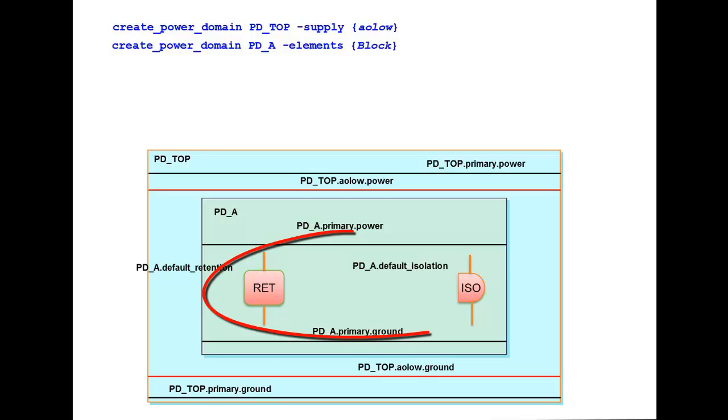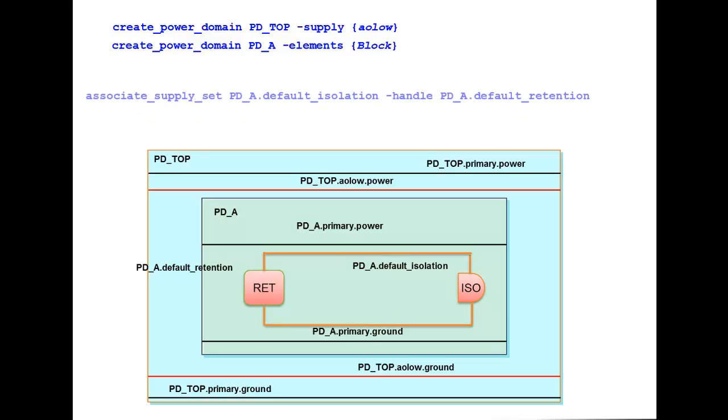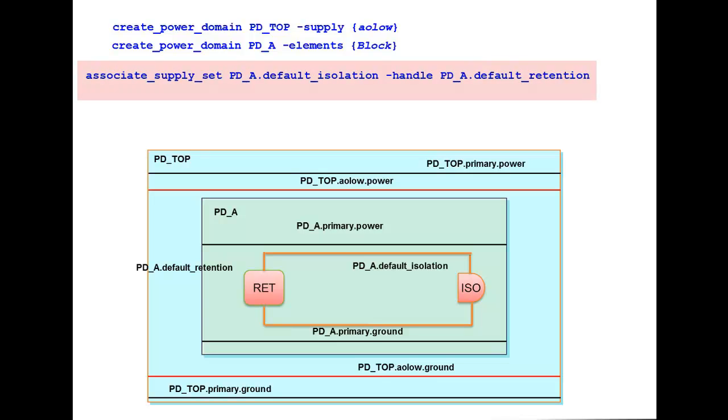In this example, let's assume the default_retention and isolation share common voltage characteristics of the supply PD_TOP.evolo. For that, first we associate PD_A.default_retention to PD_A.default_isolation using the command associate_supply_set PD_A.default_isolation -handle PD_A.default_retention.